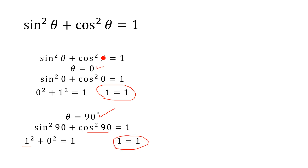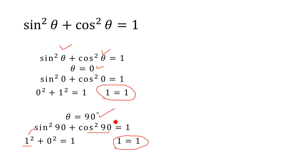So in summary: if theta equals 0, then sin 0 is equal to 0 and cos 0 is equal to 1; and if theta equals 90 degrees, then sin 90 is equal to 1 and cos 90 is equal to 0.